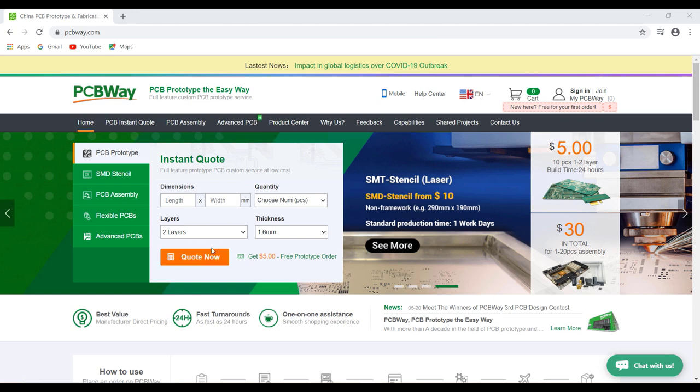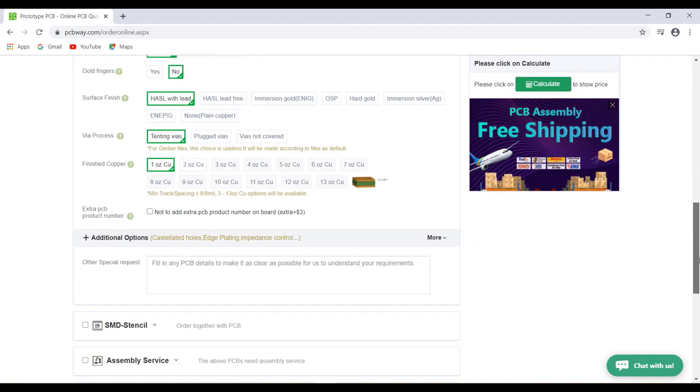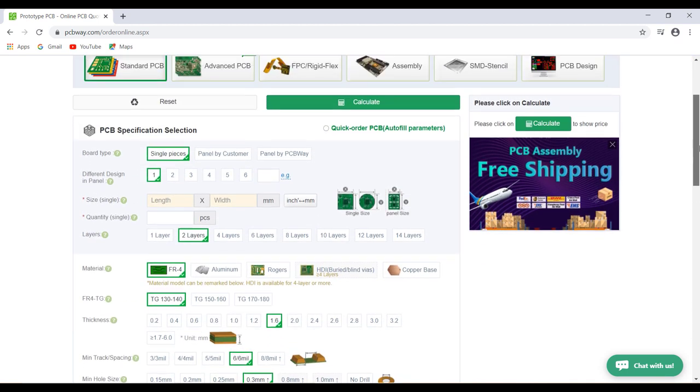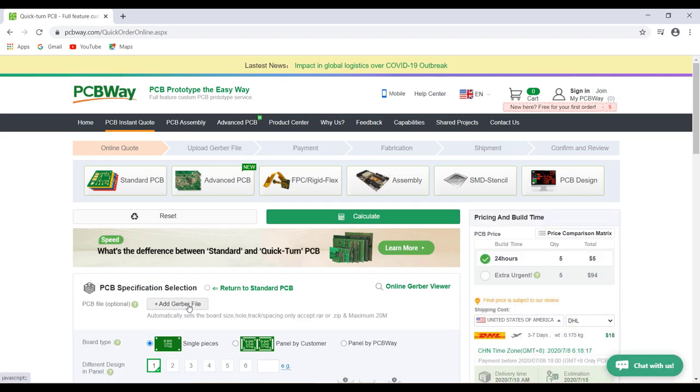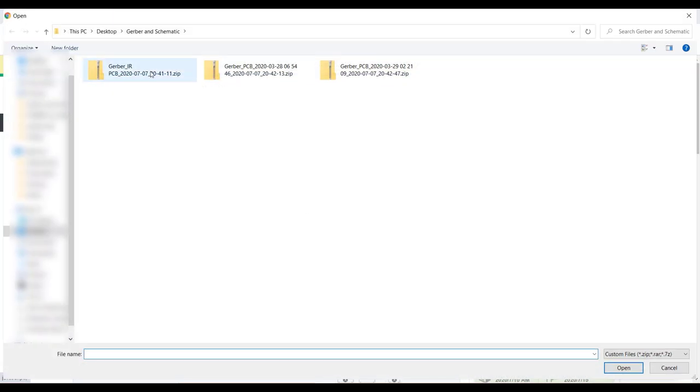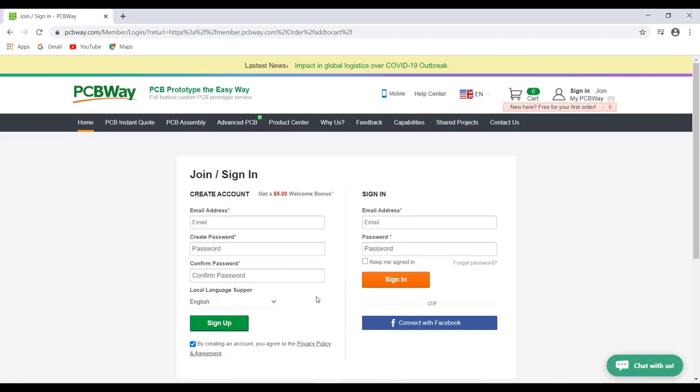To order your PCBs, just click on quote now. You can set some of your PCB parameters from here, or just click on quick order to auto set. Then upload your gerber file here. After uploading, click on save to cart, sign up with your email. Then on next page, pay for your order to complete the process.